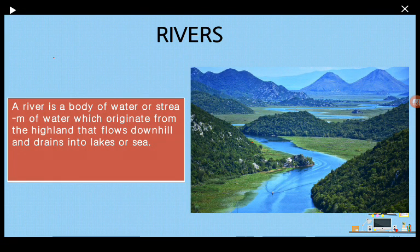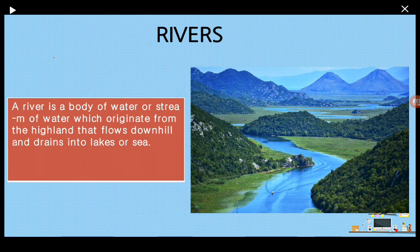Another water body is rivers. A river is a stream of water which originates from the highlands, flows downhill, and drains into lakes or sea. If you see the image on the slide, you will find that the river originates from the mountain, starts flowing through plain areas and lands, and finally joins a lake, sea, or even an ocean. Such water bodies are known as rivers.